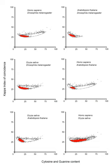In genetics, a promoter is a region of DNA that initiates transcription of a particular gene. Promoters are located near the transcription start sites of genes, on the same strand and upstream on the DNA. Promoters can be about 100 base pairs long.